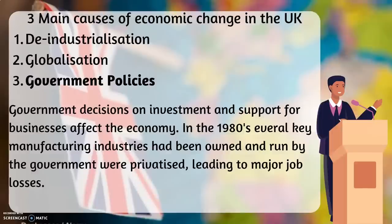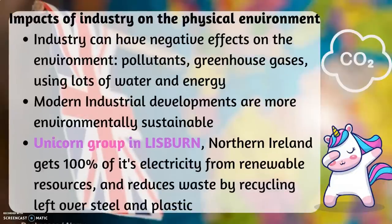Impacts of industry on the physical environment. Industry can have negative effects on the environment: pollutants, greenhouse gases, using lots of water and energy. Modern industrial developments are more environmentally sustainable. The Unicorn Group in Lisbon, Northern Ireland, gets 100% of its electricity from renewable resources and reduces waste by recycling leftover steel and plastic.